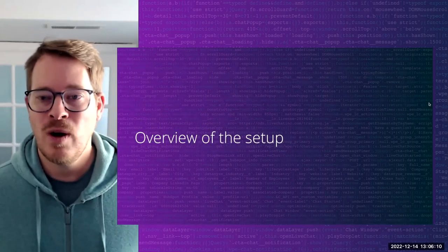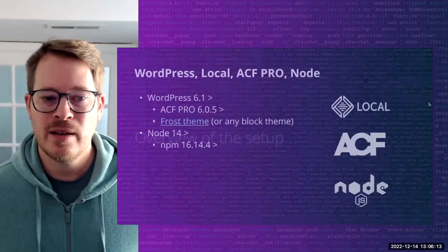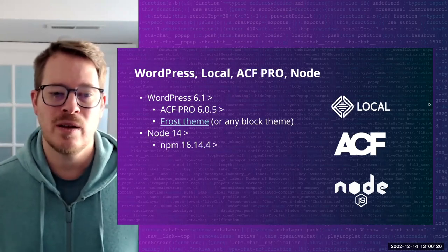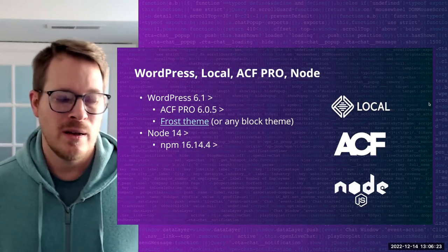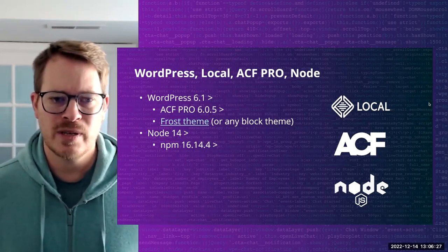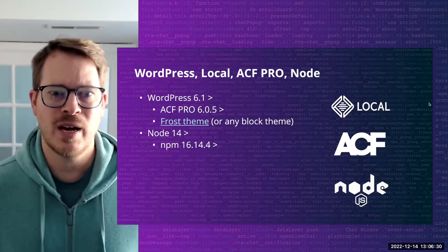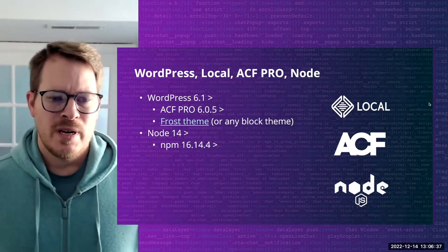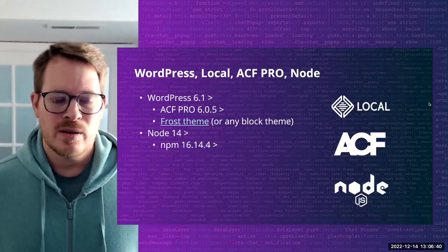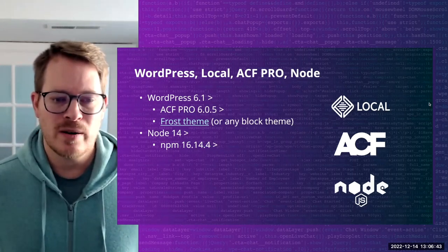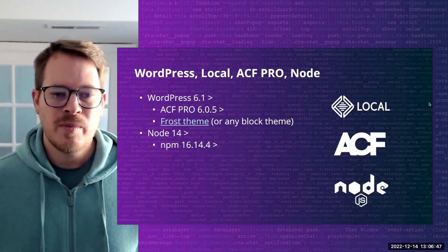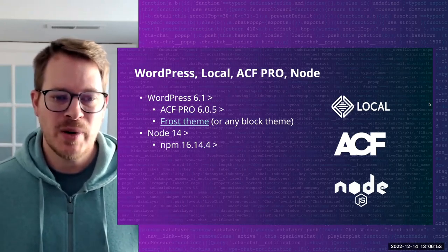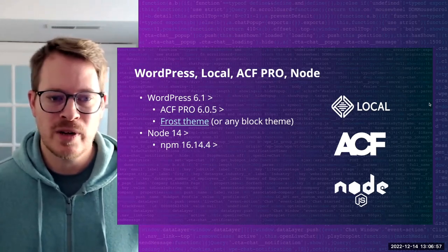An overview of what we're going to be starting from today: we're going to have a basic WordPress install. I'm running 6.1 with ACF Pro. This was originally built with 6.0.5, and I know 6.0.6 came out yesterday and it still works with that as well. And Node 14 and NPM 16 - I only say that because the create block package requires this as a baseline for the install. I'm using WP Engine's Frost theme, but you can use any theme for the accordion output.